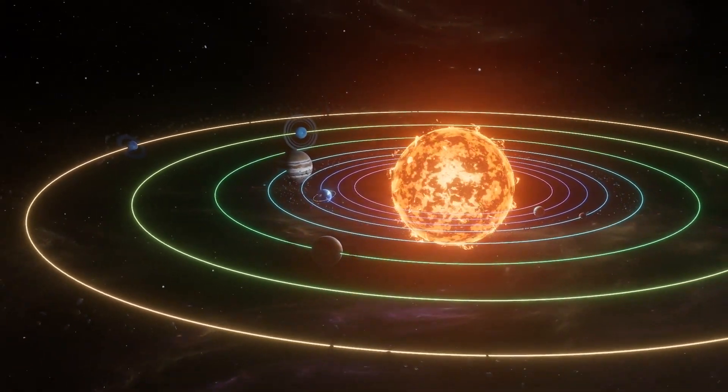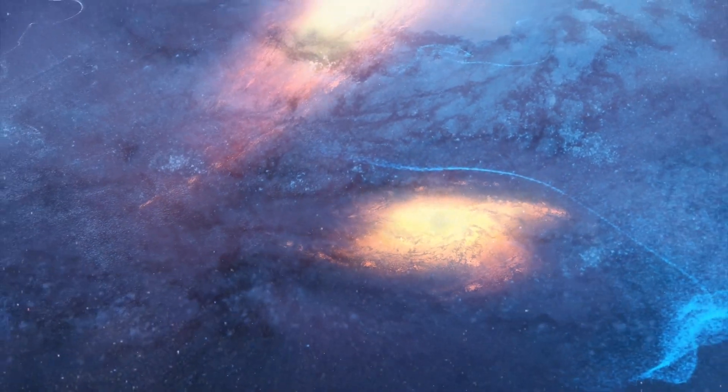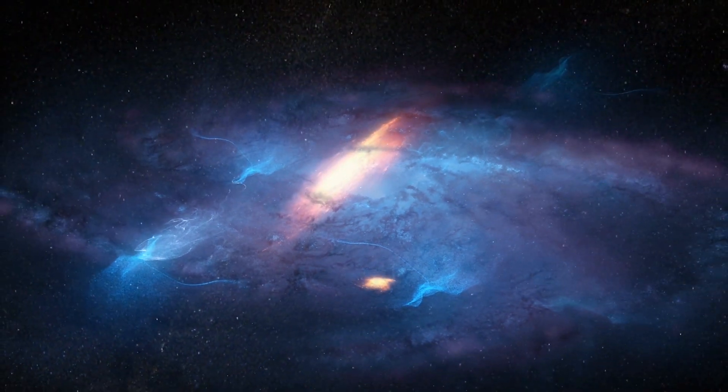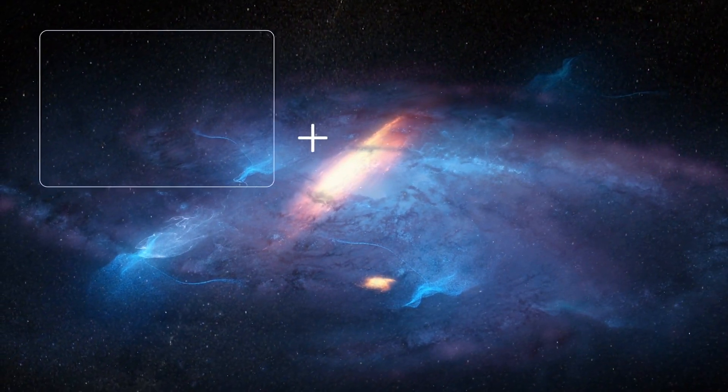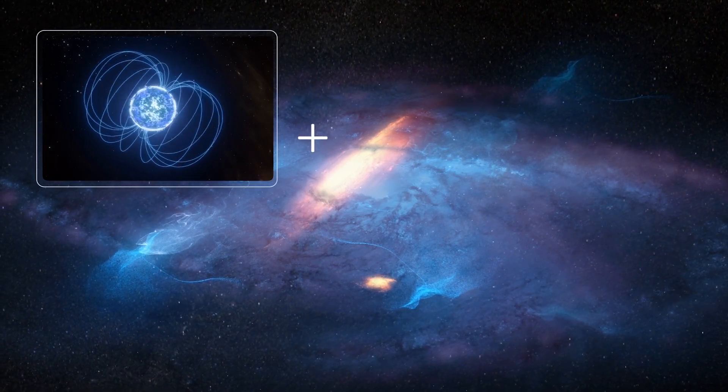This magnetar is located 16,000 light years away from Earth in the constellation Sagittarius. Since its supernova was visible 240 years ago, the star is 16,240 years old.